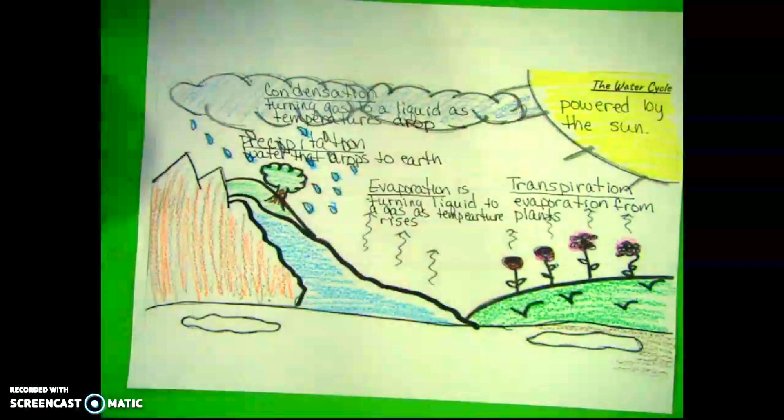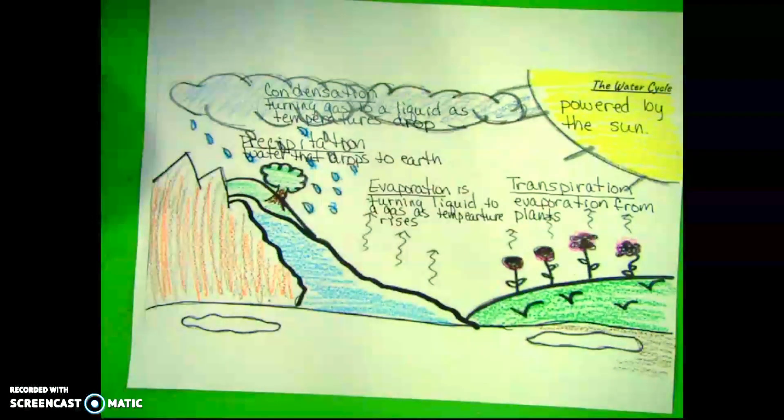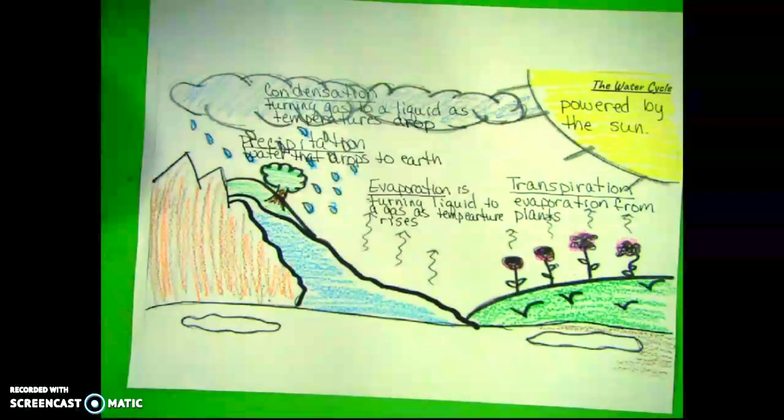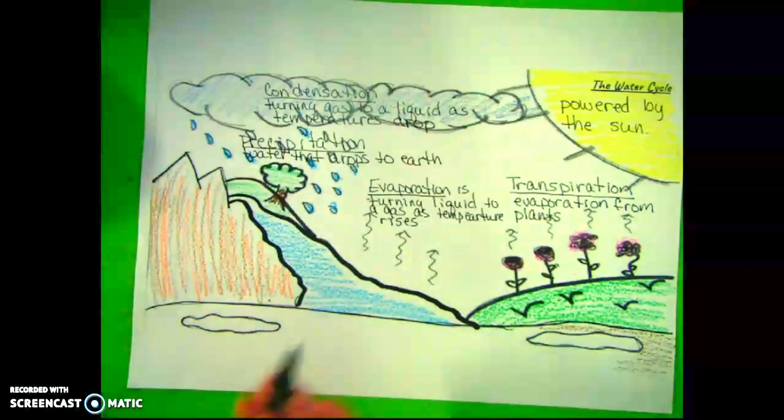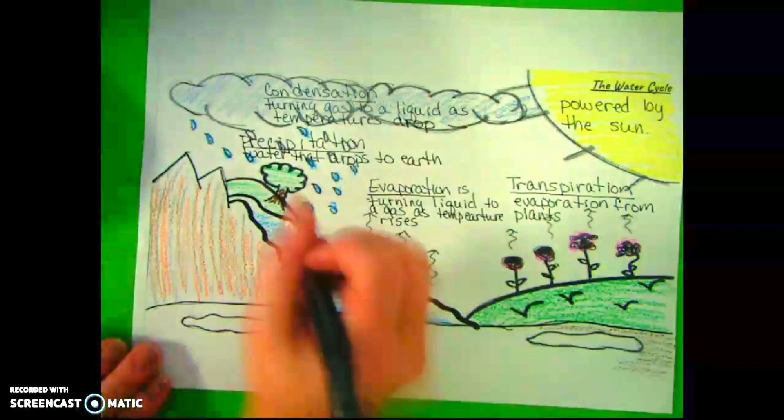Once the precipitation drops, there's a few things that can happen. It creates runoff, accumulation, and groundwater.